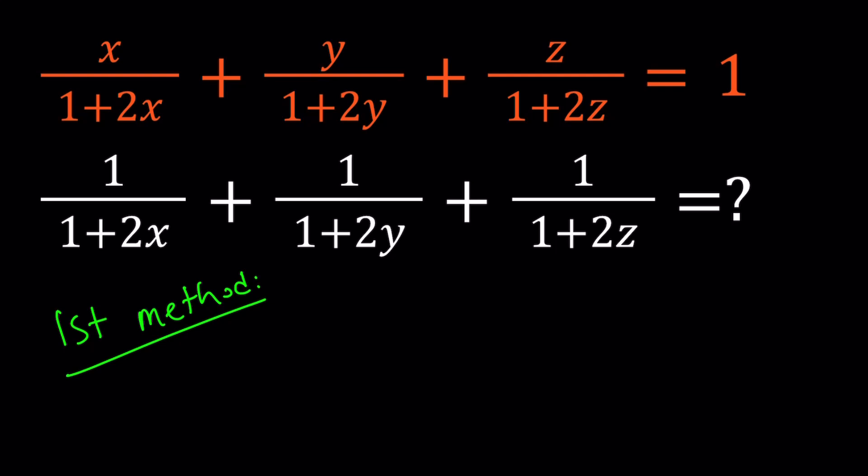So, here's the first method. Notice that x over 1 plus 2x can be manipulated a little bit. And I'm going to do it for x first, and then it can definitely be applied to other variables. So, if this is like a function, f of x, then this would be the value of f of y, and this would be the value of f of z. Alright, great. So, let's go ahead and do the following.